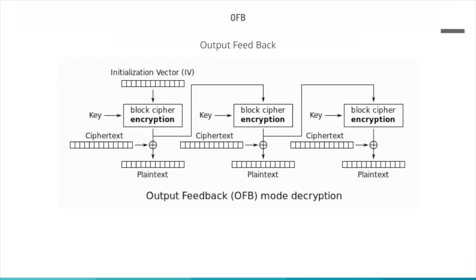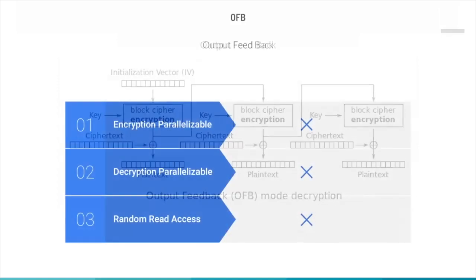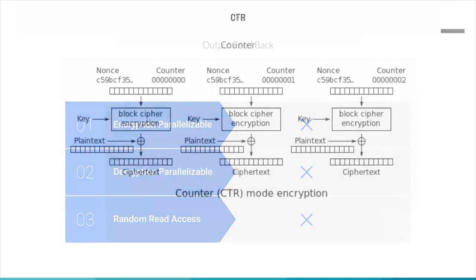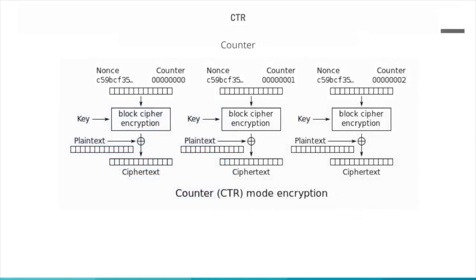The OFB mode is similar in structure to CFB. The key difference is that in OFB it is the output of the encryption function that is fed back to the shift register, whereas in CFB the ciphertext unit is fed back. One advantage of the OFB method is that bit errors in transmission do not propagate. CFB, OFB, and CTR modes do not require any special measures to handle messages whose lengths are not multiples of the block size.